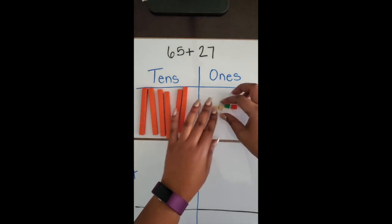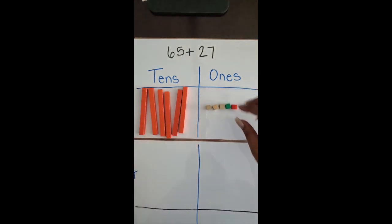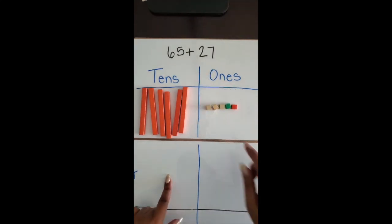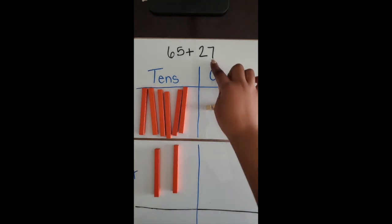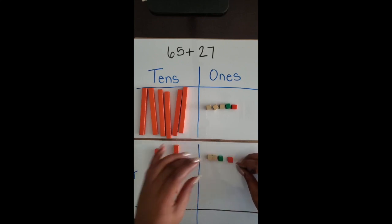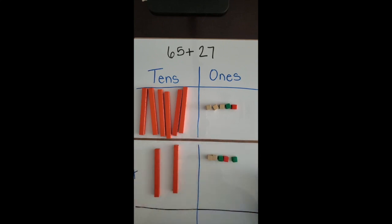The colors don't matter, it's the size that matters, so we have 65. And then down here I'm going to build the number 27: 10, 20, and then seven ones: 1, 2, 3, 4, 5, 6, 7.